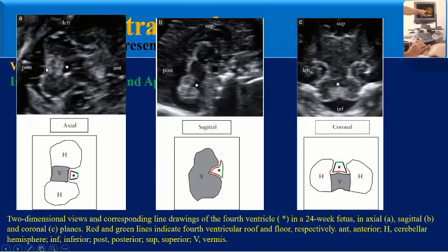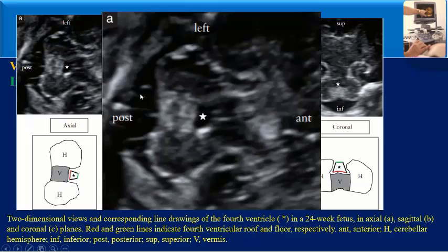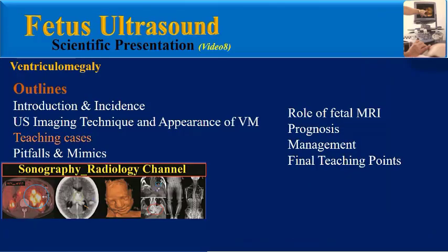An axial ultrasound image at 19 weeks shows the third ventricle as a single echogenic line between the thalami; at 13 weeks it appears as parallel echogenic lines; and at 29 weeks a V-shaped configuration is seen, with calipers positioned on the walls to measure its maximum diameter. If the diameter is equal to or more than 3.5 mm it is considered ventriculomegaly. Similarly, if the fourth ventricle transverse diameter equals or exceeds 4.8 mm, it may indicate ventriculomegaly.